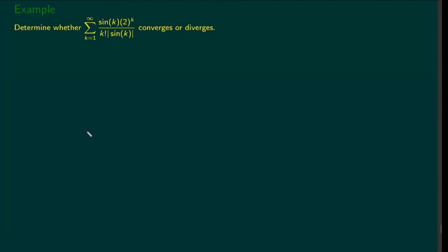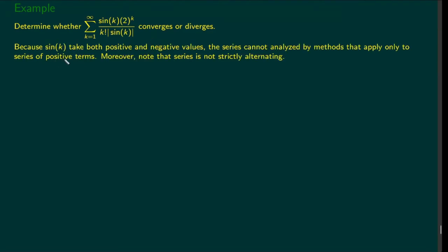Let's look at an example series. This sine can take both positive and negative values, so the series cannot be analyzed using tests for only positive series. That means we cannot apply tests like the ratio test or root test directly to this one.